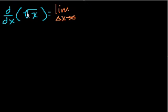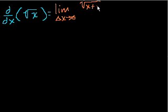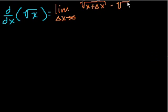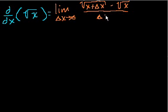Then we say f(x + Δx) — so in this case f(x) = √x, so it's √(x + Δx) — minus f(x), which is √x, all of that over the change in x, over Δx.